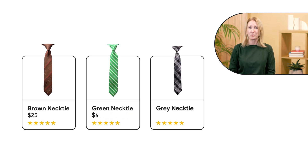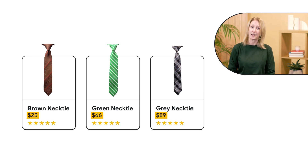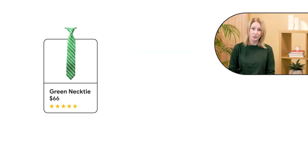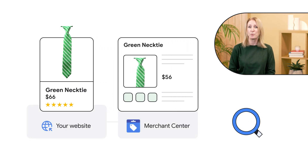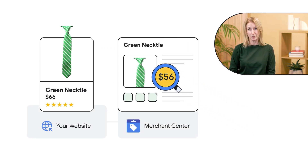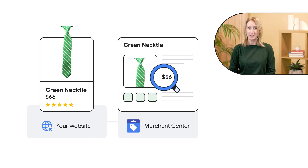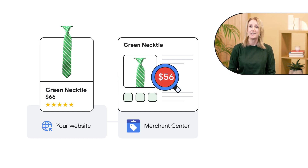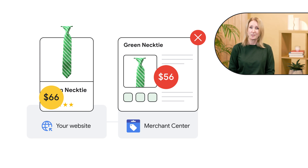We can all agree that accurate pricing is crucial to providing a smooth customer journey and to ensuring that your product listings and ads perform well. To help protect shoppers and maintain a transparent shopping experience, Google performs checks on the prices you've submitted in Merchant Center and the prices shown on your product landing pages on your website. Inconsistencies between these prices can lead to your products being disapproved, and this can impact your product visibility in shopping ads and free listings.